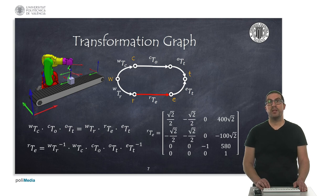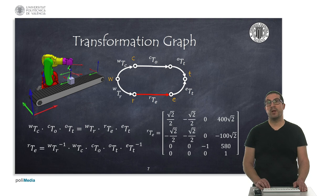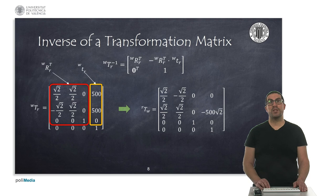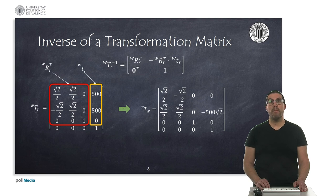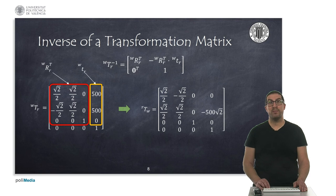Bear in mind that in order to obtain that result, I had to perform not just matrix multiplications, but also the inverse of transformation matrices. The inverse of a transformation matrix is a well-known expression that does not require a conventional matrix inversion. Here I show the actual operations required to compute the inverse transformation matrix — in this case, T_wr. As you can see, the rotation submatrix is transposed, while the translation component is the translation vector multiplied by the transposed rotation matrix and negated. Note that by performing the inverse, we obtain the position and orientation of the world reference frame with respect to the robot reference frame, and for that reason the sub-index and upper index are flipped.